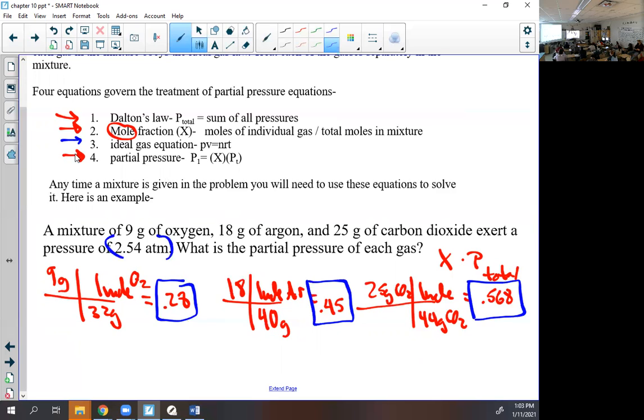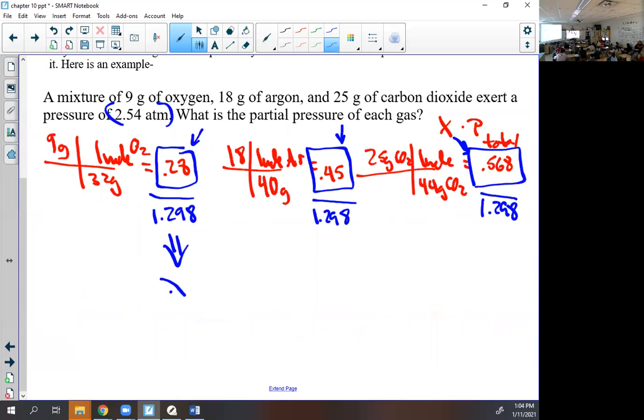It gave us the pressure, 2.54. I'm an idiot, sometimes it does not give you the pressure and you have to calculate it. Now I know the moles, I need X, so I need these numbers divided by the total. Someone add these up for me, the three of them. 1.298. That will give me the mole ratio for each one of them.